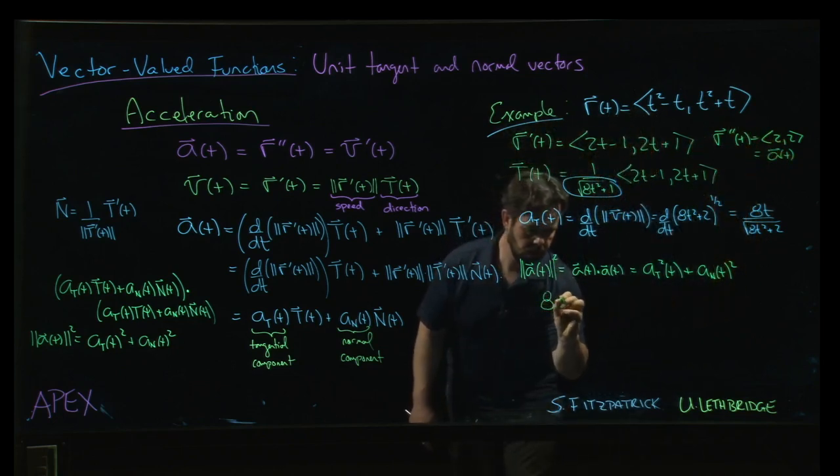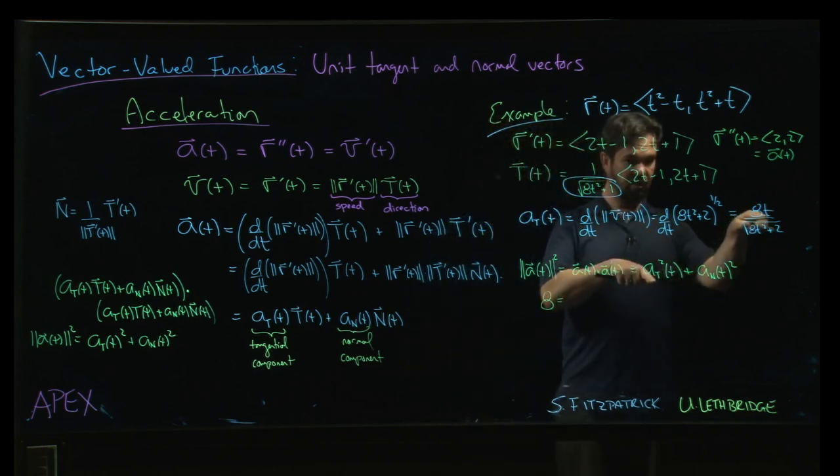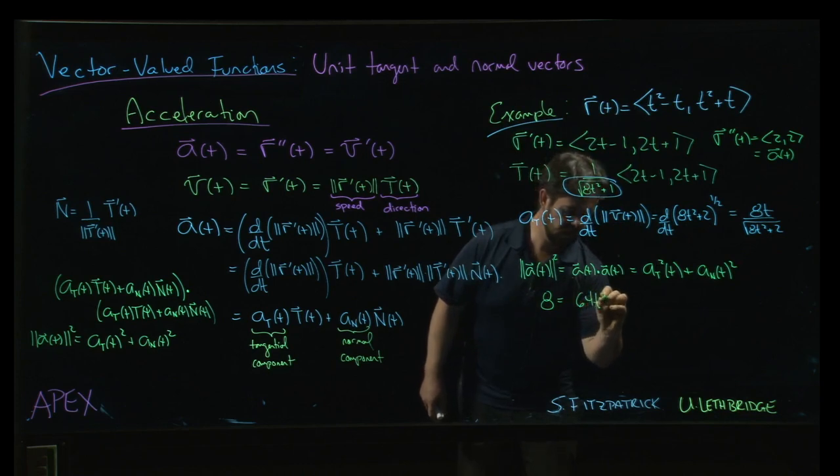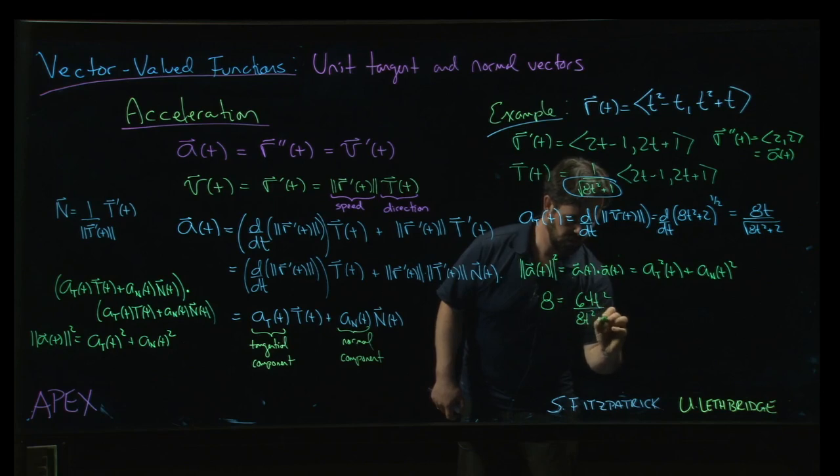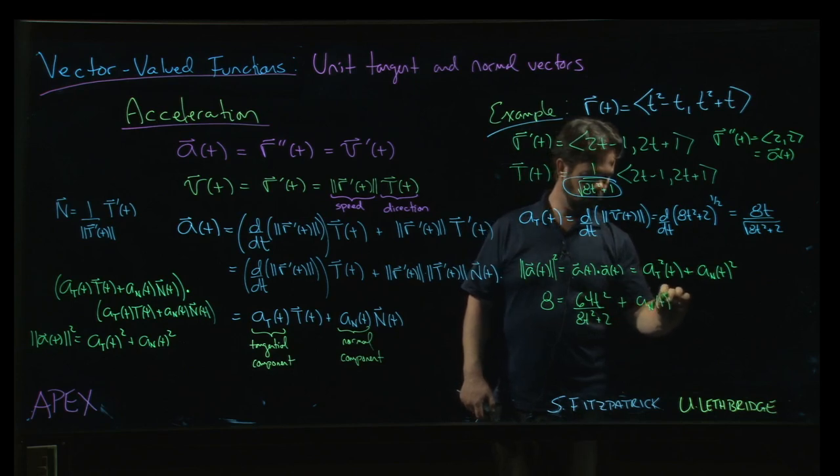So 8 equals the tangential component squared, which is sitting right here, 64t² over 8t²+2, plus that normal component, which is the thing that we want, right?